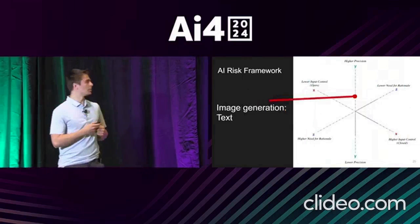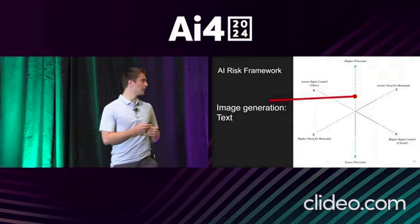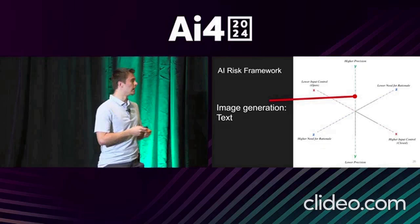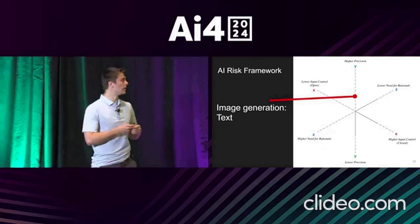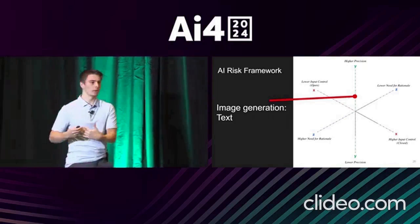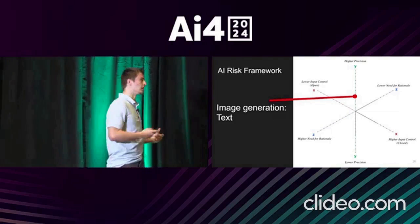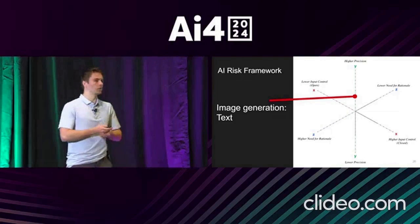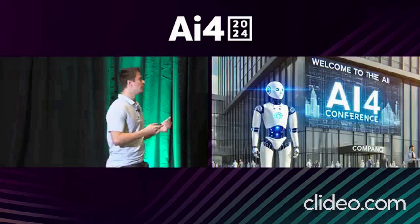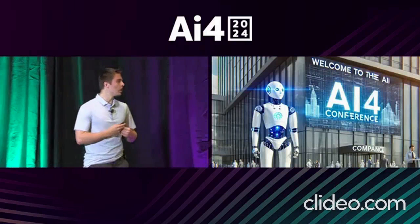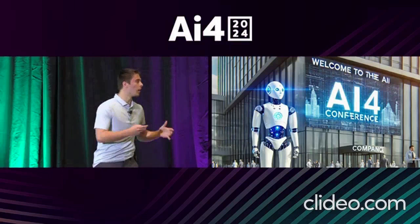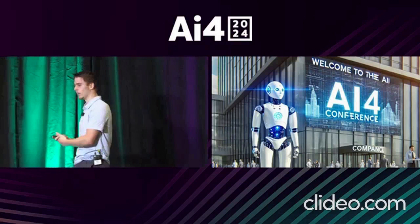You can see just how much precision matters by picking a subcategory that requires more precision within image generation — like generating text in an image. There's lots of leeway in how you might imagine a dog, but less leeway in imagining different letters of the alphabet, so it requires more precision to create text than to create an image of a dog. And if you've used AI for image generation, you know it struggled with generating text for a while — up in the corner it doesn't exactly get the word right, and it's pretty easy for us to see when it makes that misspelling.